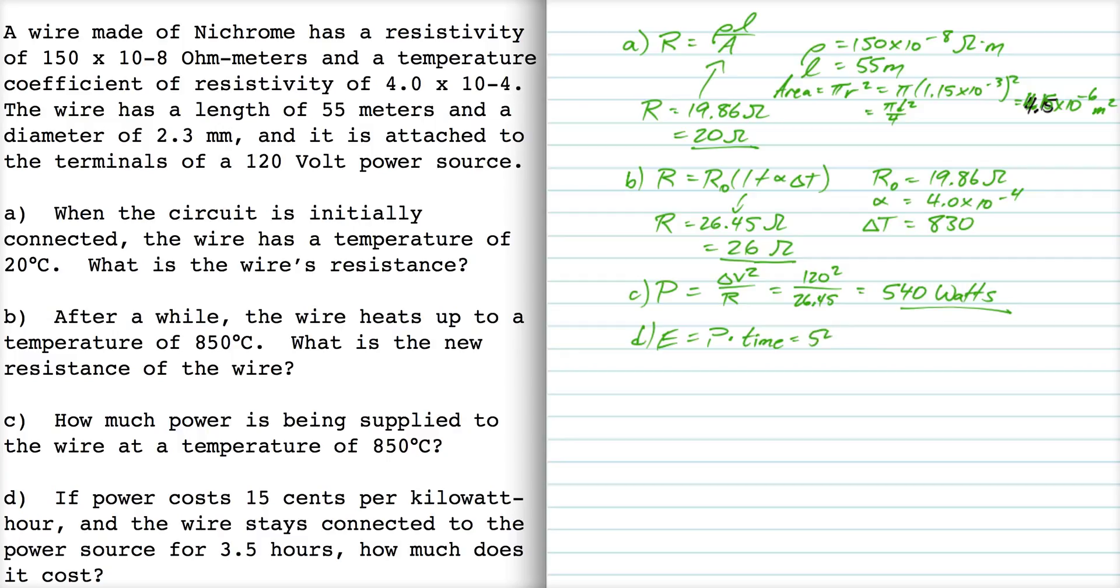So let me calculate energy as being power multiplied by time. We get 540 watts multiply by time, I want to multiply by 3.5 hours, but then I want to convert hours into seconds because watts is joules per second.